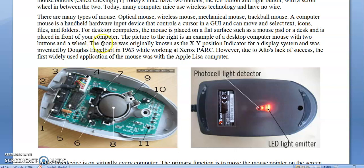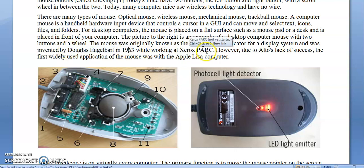The mouse was originally known as the XY positional indicator for a display system. It was invented by Douglas Engelbart in 1963 while working at Xerox. However, due to Alto's lack of success, the first widely used application of the mouse was with the Apple computer. That is the history of the mouse.